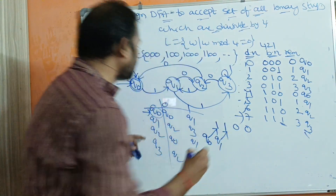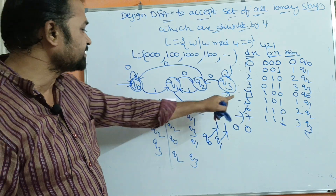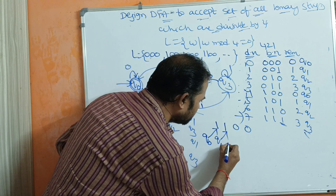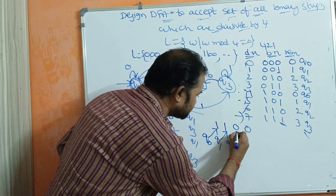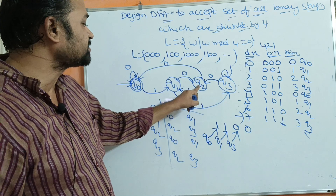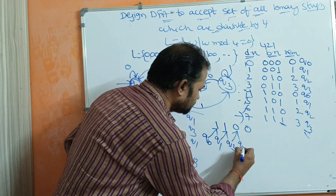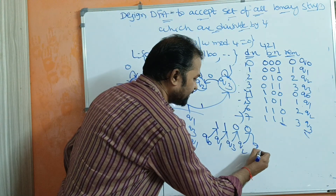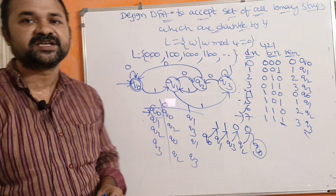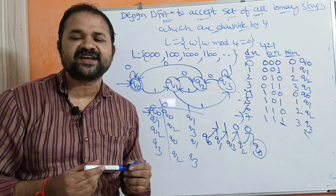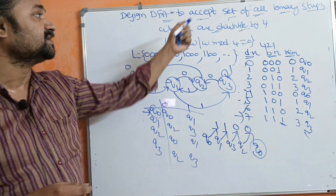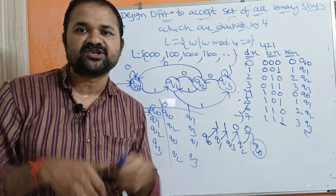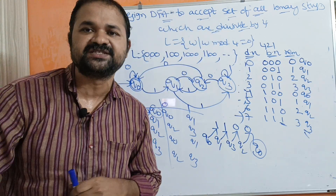Let's verify with an example input. Q1 on 1 goes to Q3, Q3 on 0 goes to Q2, and Q2 on 0 goes to Q0 — which is our final state. So the DFA correctly accepts binary strings divisible by 4, i.e., strings where mod 4 equals 0.